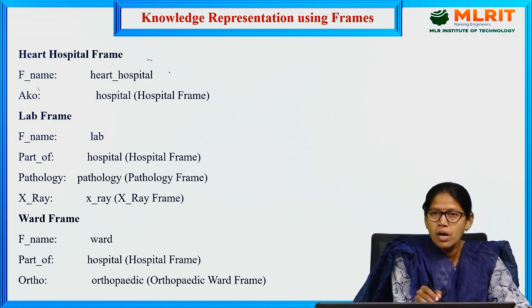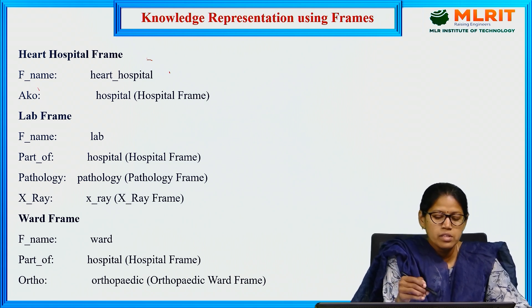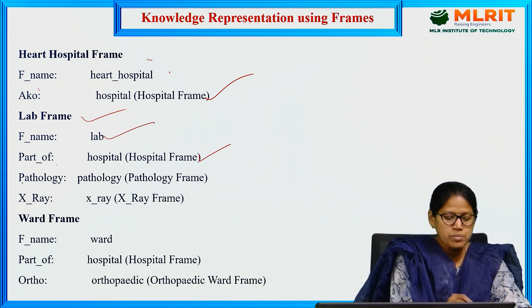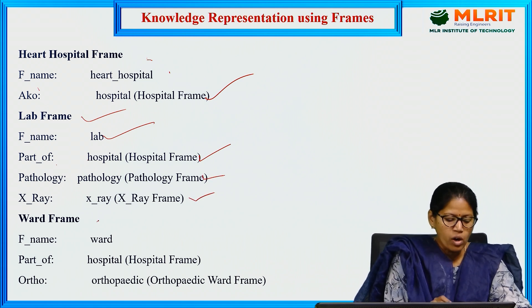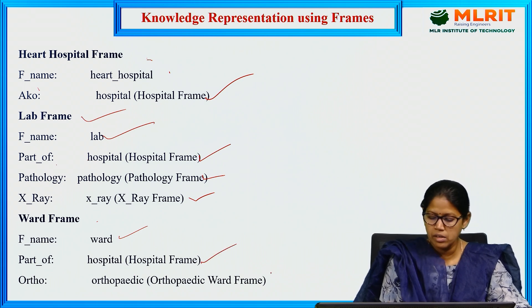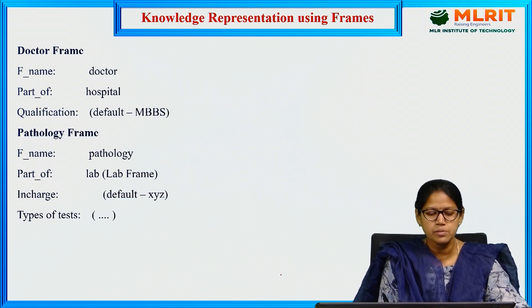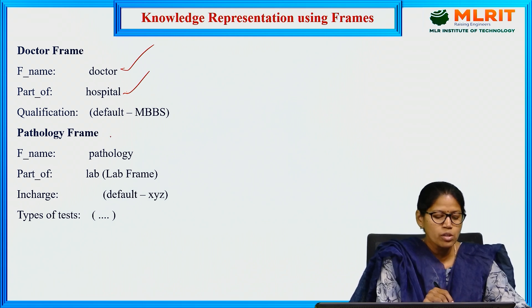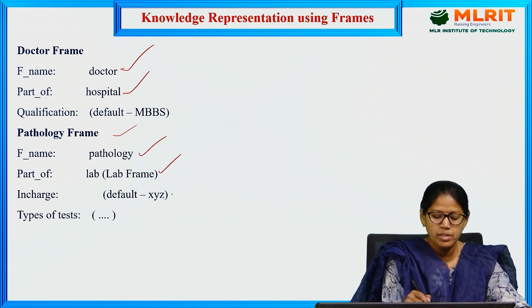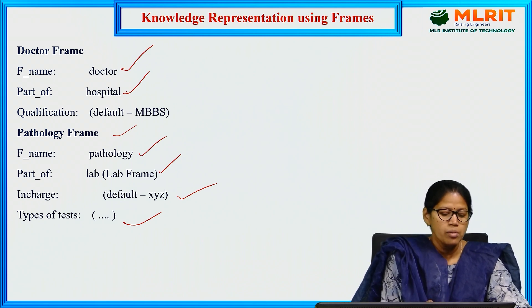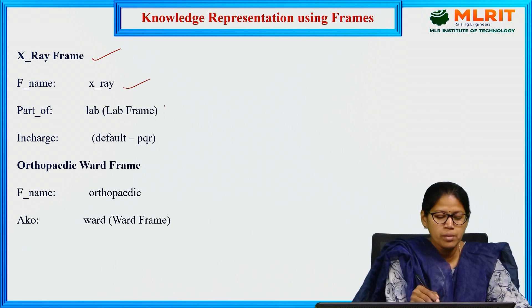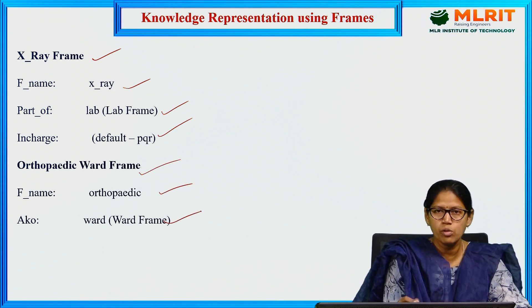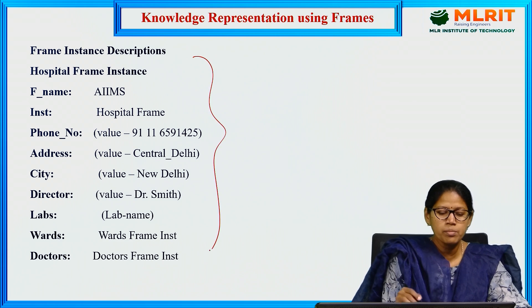Heart hospital frame: frame name is heart hospital, echo relates it to hospital. Lab frame: frame name is lab, part of hospital, and other frames of this lab are pathology and x-ray. Ward frame: frame name is ward, part of hospital, and its subframe is orthopedic. Doctor frame: frame name is doctor, part of hospital, qualification default is MBBS. Pathology frame: frame name is pathology, part of lab, in-charge, and tests conducted there. X-ray frame: frame name, part of, in-charge. Orthopedic ward frame: frame name, echo relates it to ward.